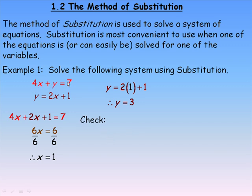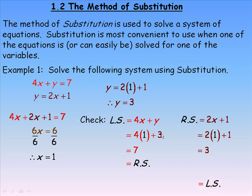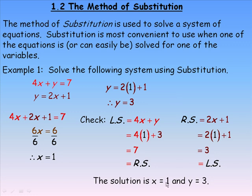We'll check by substituting into both equations. First equation: 4x plus y equals 7. Putting 1 in place of x and 3 in place of y: 4 times 1 is 4, plus 3 is 7. That matches the right side, so it checks. Second equation: putting 1 in place of x in 2x plus 1 gives 2 plus 1 equals 3, which matches y. So the solution is x equals 1 and y equals 3 — the only pair that satisfies both equations.